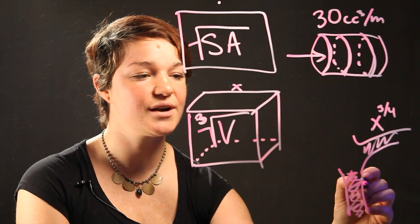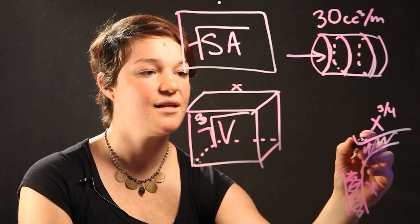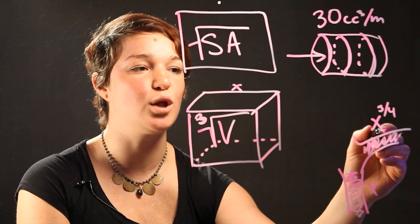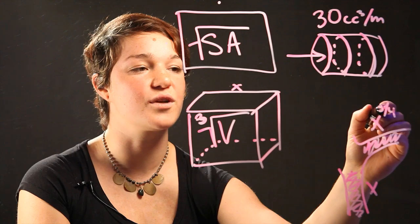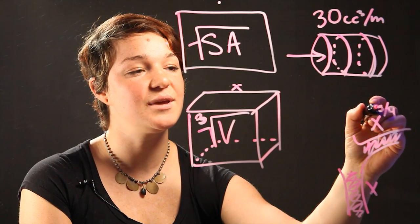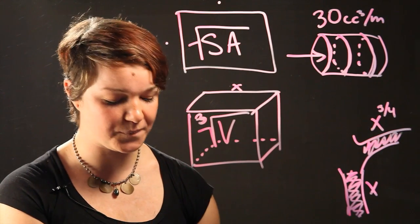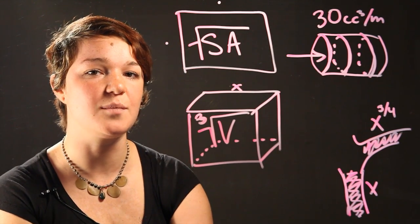So if the main trunk has a volume of x, this tree limb is going to be slightly smaller by one-fourth power. So it's going to be x to the three-fourths power. And it's the same if you think about veins, for example.